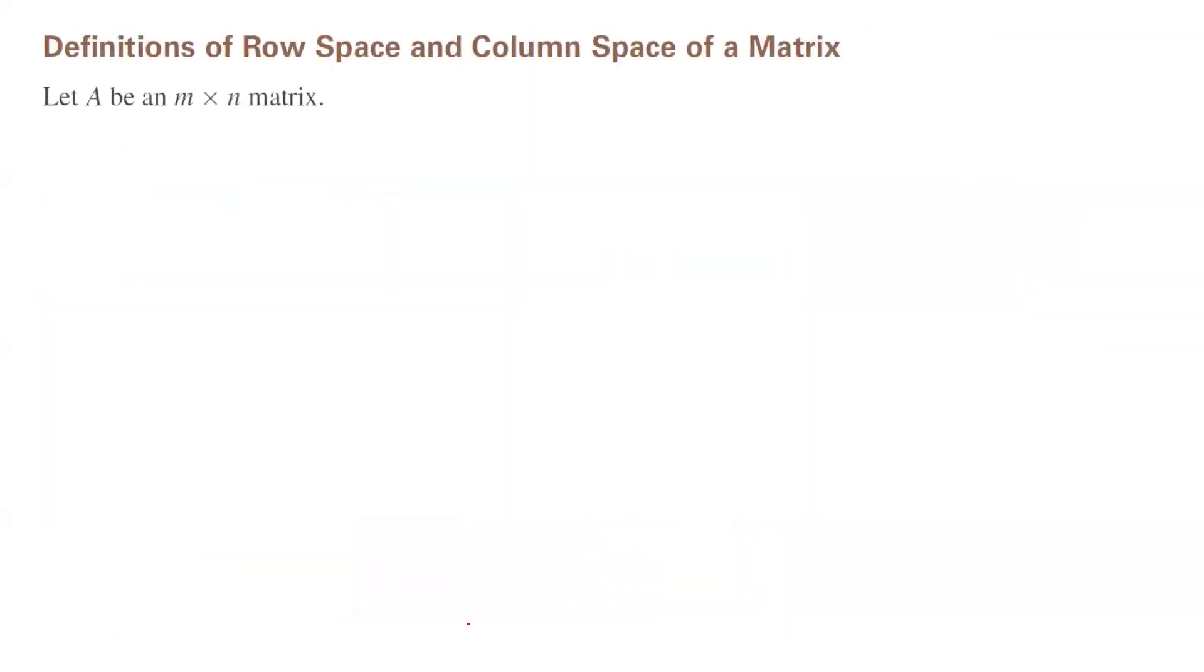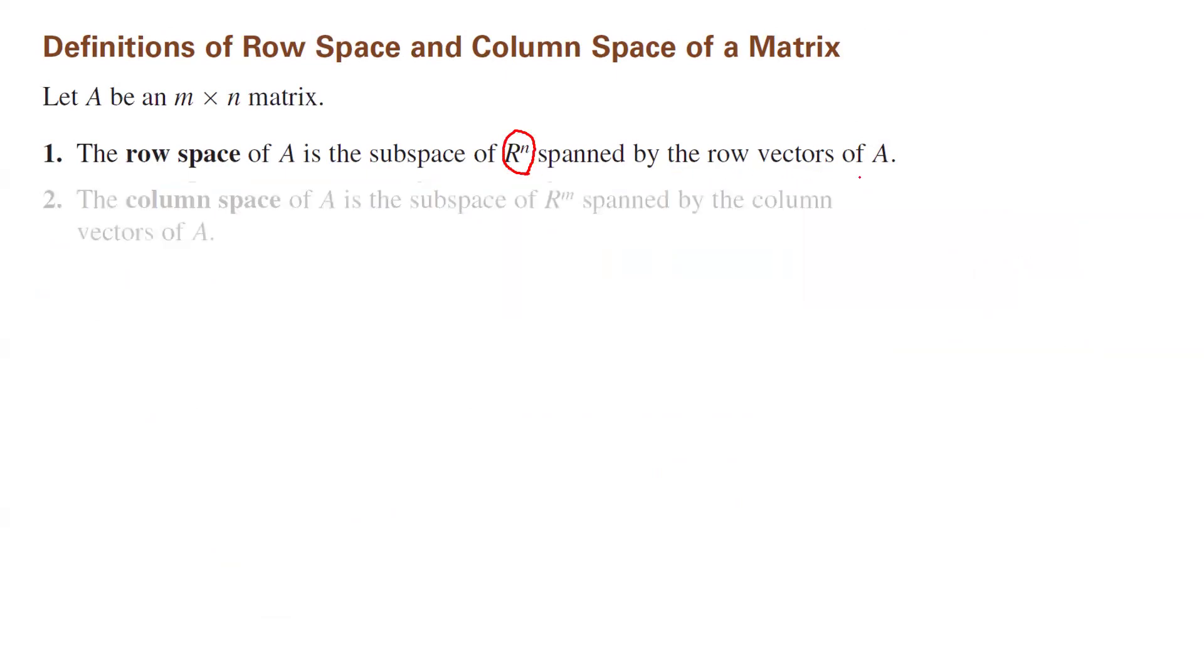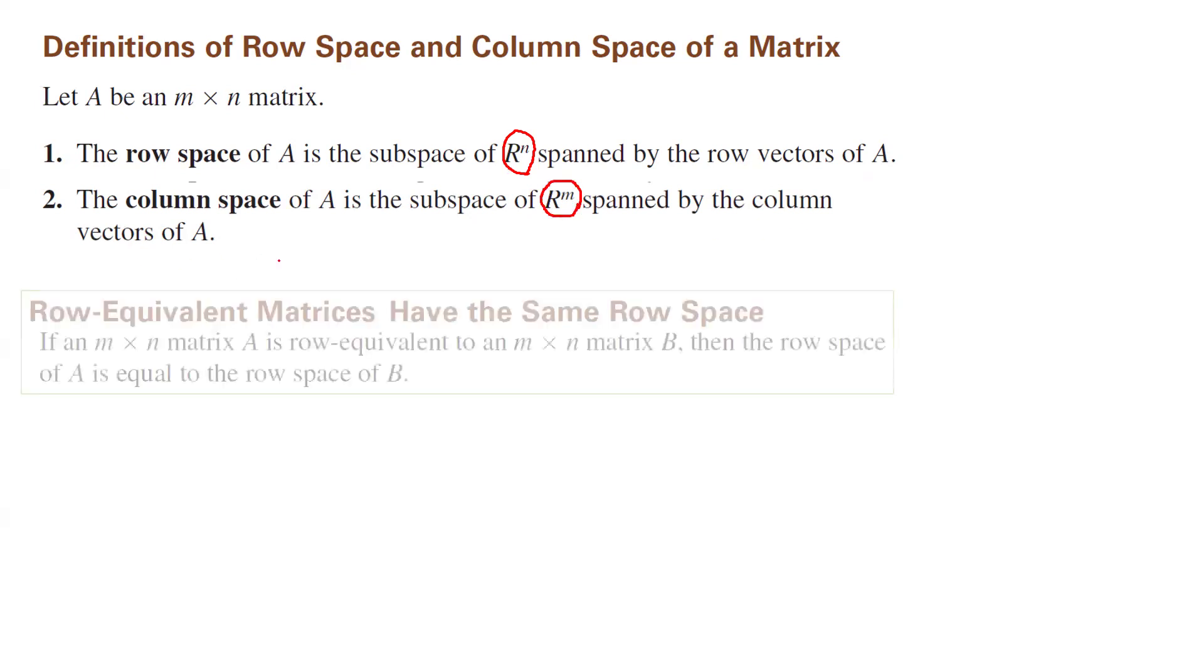Why is this important for us? Because we can take this and define the row space and column space of a matrix. Suppose A is an m by n matrix. The row space of A is the subspace of n space spanned by the row vectors of A. The column space of A is the subspace of m space spanned by the column vectors of A.